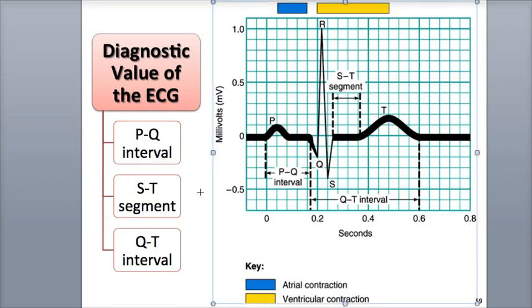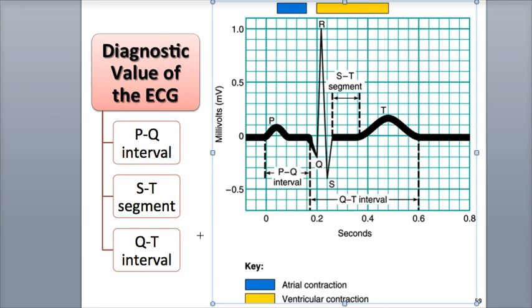The length of time between waves is called an interval or segment. Time intervals longer or shorter than normal may indicate an abnormality.